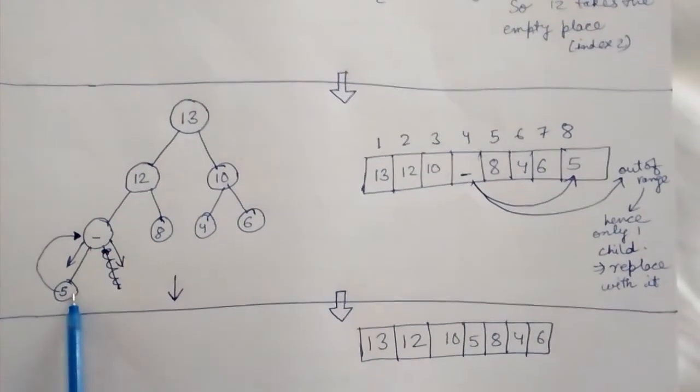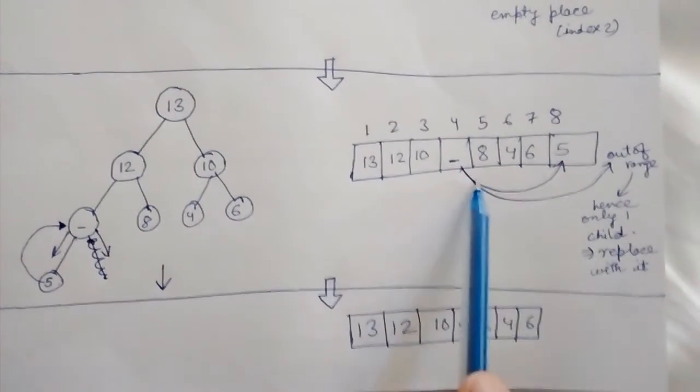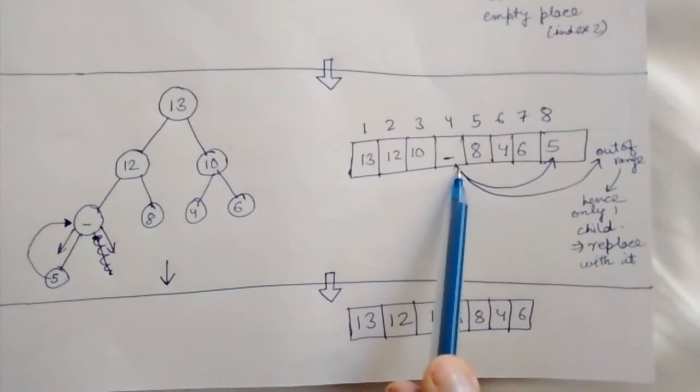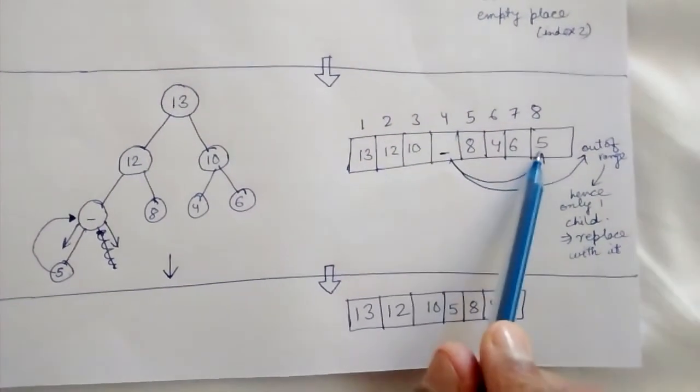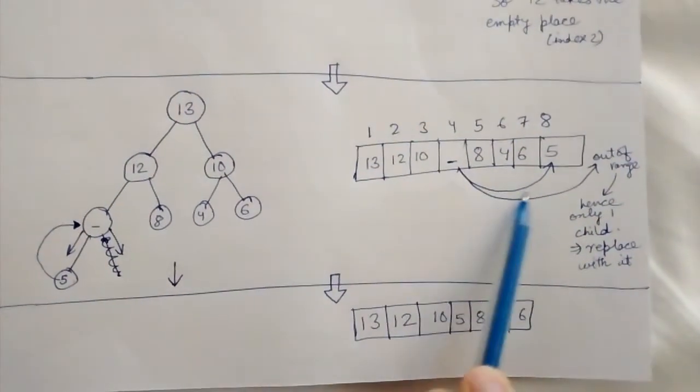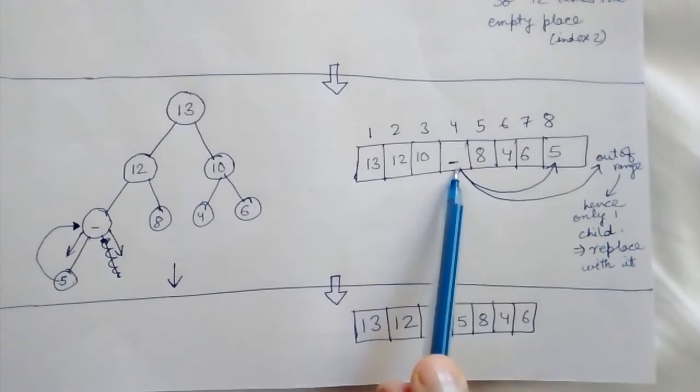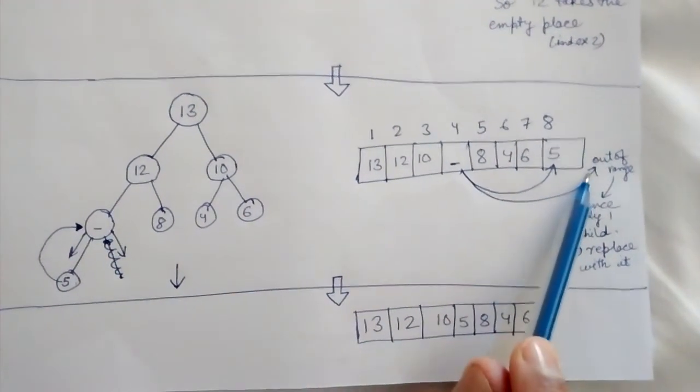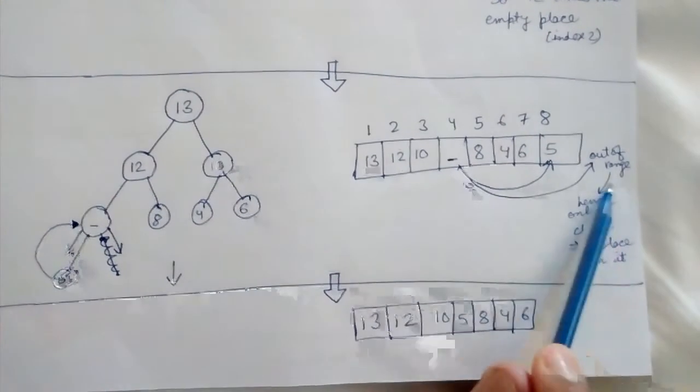index 4 has only one child. In our array representation, this is indicated by 4×2=8, which exists, but 4×2+1=9 is out of range of our array size, hence only one child.